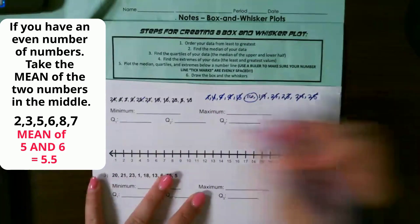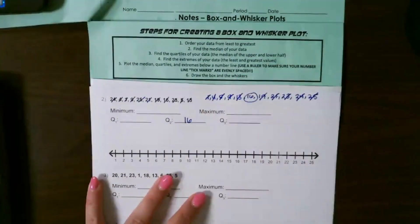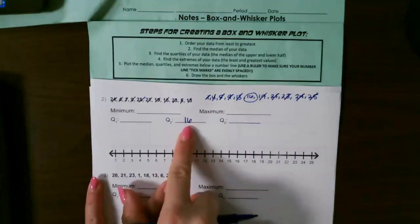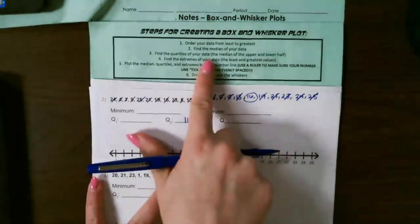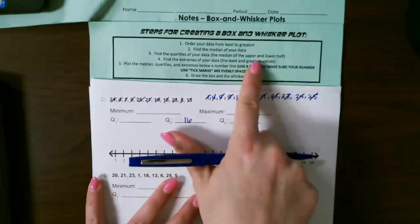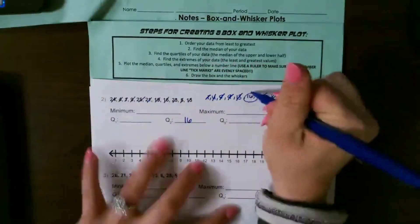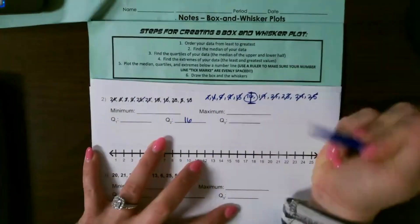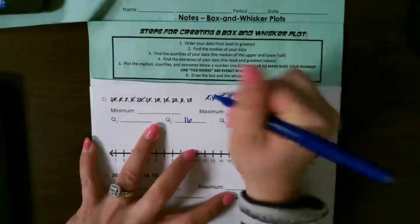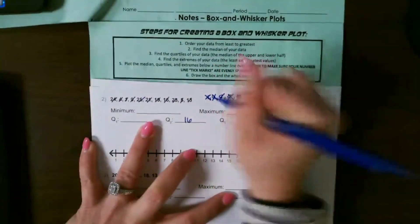Which also means it's our Q2. Median is also called Q2. Then I have to find the quartiles of our data, which is the median of the upper and lower half. So I'm going to split my data into two sets and I'm going to find the median of the lower half by doing the same thing. So that would be 5, so that would be Q1.